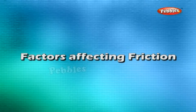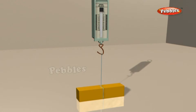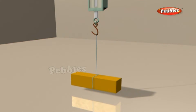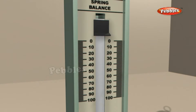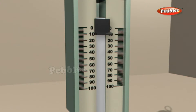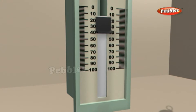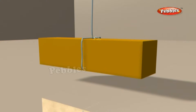Factors affecting friction. Tie a string around a brick and pull the brick by a spring balance. You need to apply some force. Note down the reading on the spring balance when the brick just begins to move. It gives you a measure of the force of friction between the surface of the brick and the floor.